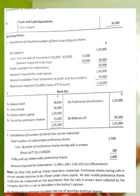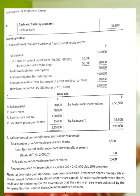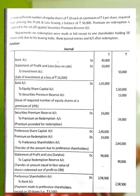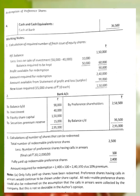Now, the bank account is prepared. Opening balance brought down Rs.90,000. Add: Investment sold Rs.40,000. Add: Equity share capital issued Rs.1,50,000. Add: Securities premium reserve Rs.15,000. Total credit side of bank account = Rs.2,95,000.